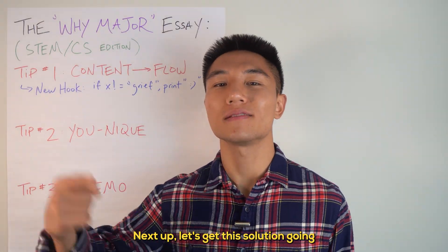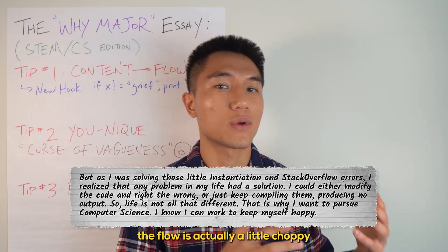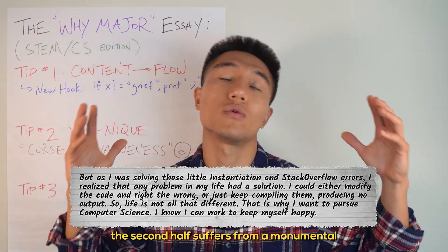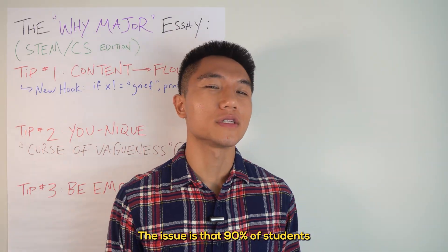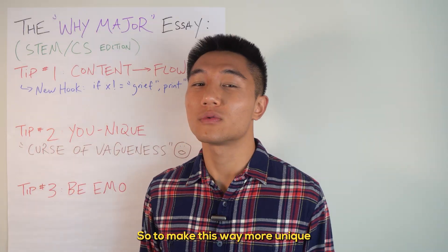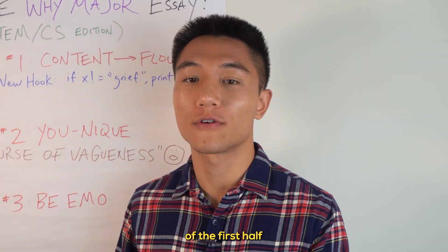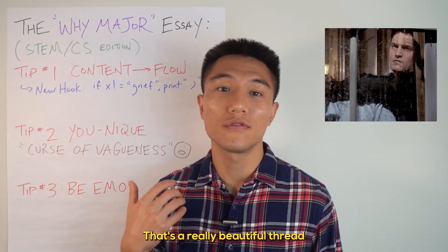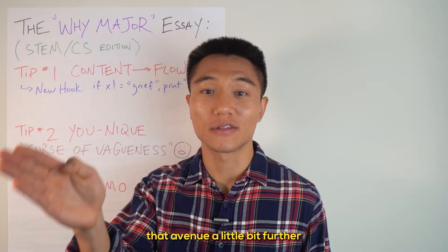Next up, let's get this solution going. Here's what the student wrote before — the flow is actually a little choppy. It's rather weak. And if you've seen our other videos, you'll know that this second half suffers from a monumental problem: the curse of vagueness. The issue is that 90% of students who've done a little bit of computer science could have written that second half. So to make this way more unique, we need to focus on the most unique part of the first half, which is the fact that computer science cured this student's grief. That's a really beautiful thread and not something many other students can reference, so of course we should pursue that avenue a little bit further.